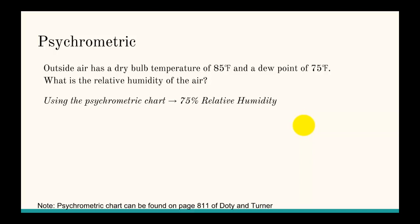That's probably your first best bet to do this. There is a psychrometric chart in Doty and Turner on page 811. If you use the chart here, you get about 75% relative humidity. Sometimes the chart, some people might get 73% or 70% or 80%. You just want to choose the multiple choice answer that's closest to what you get.